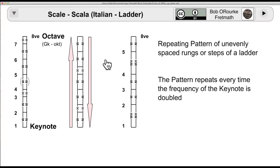The idea is, you start with equally spaced half tone intervals, then remove some of those notes to make the climb more interesting. The pattern repeats every time the frequency of the key note is doubled. That's the octave.